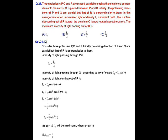The polarizer Q is now rotated about the z-axis. In this question, we have to find out the maximum intensity of light coming out of R. To solve this, let us consider that the polarizer Q is rotated about the z-axis by angle phi.